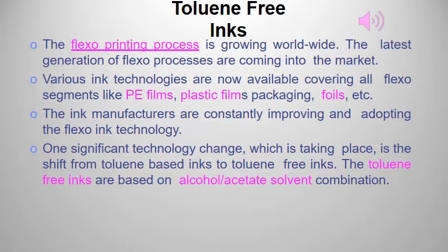Toluene-free inks are based on an alcohol-acetate solvent combination. The major reasons for this shift are: high levels of solvent retention in the print leading to potential residual odour; high risks of migration of toxic impurities, which is avoided using alcohol-acetate systems; and the occupational exposure limit for toluene is 50 ppm compared to 400 ppm for ethyl acetate. Unlike the alcohol-acetate system, there is very limited ink chemistry possible with toluene and it cannot be used in multipurpose ink series.